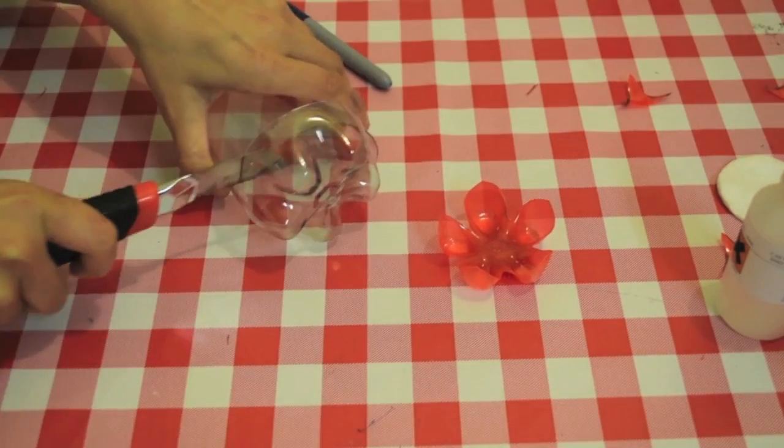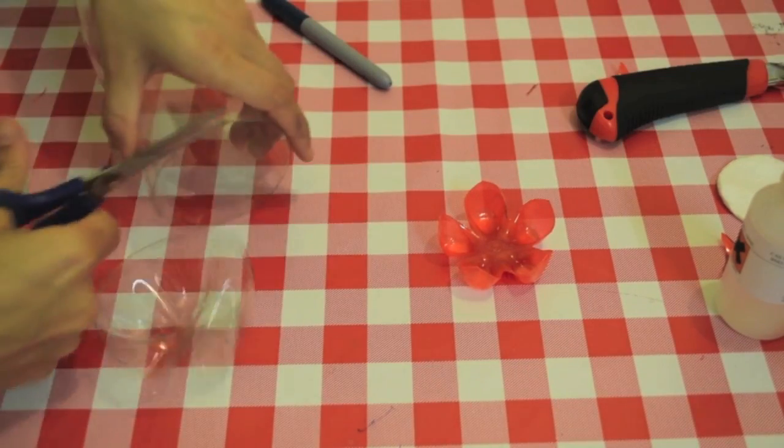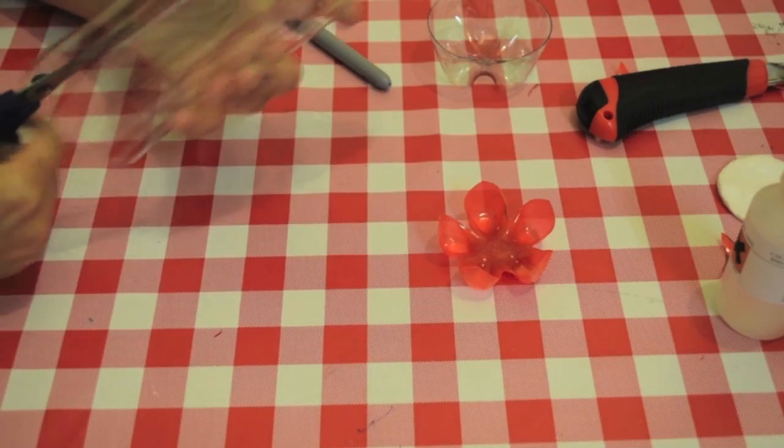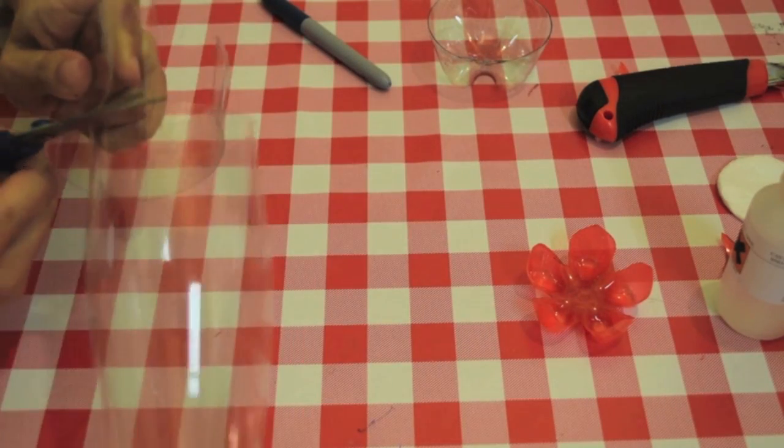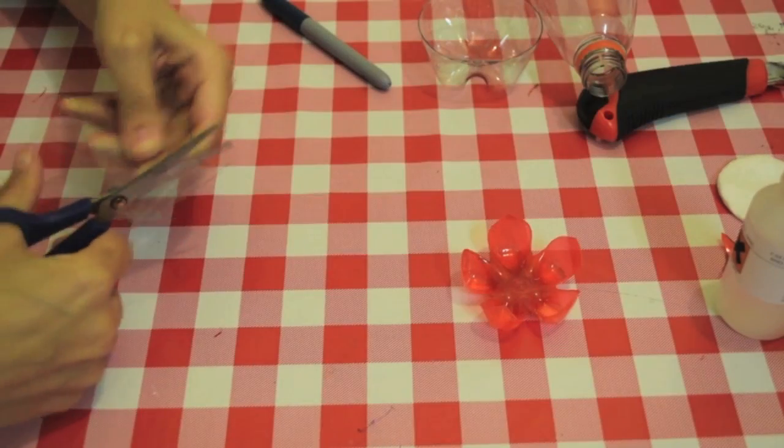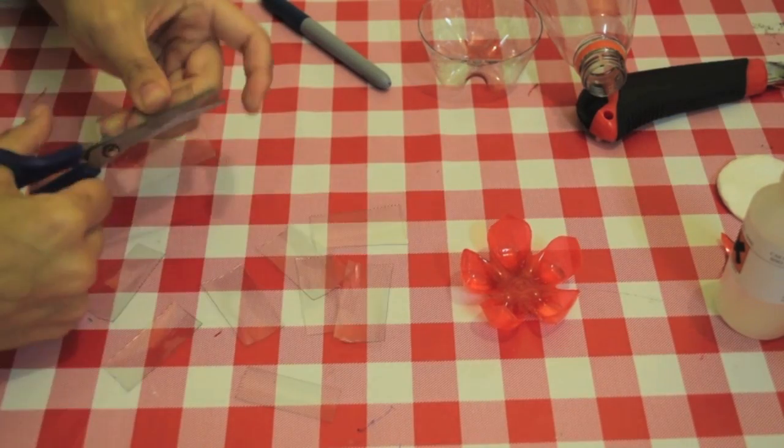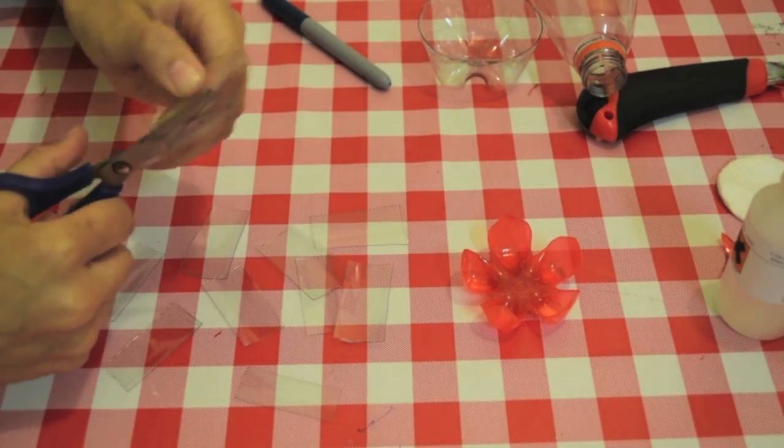Now let's move on to the second bottle. Remove the bottom part and we're going to use its body. Cut out about a 2-inch wide piece. This is actually less than 2 inches I guess. Cut it into small strips so we can cut some petal shapes.